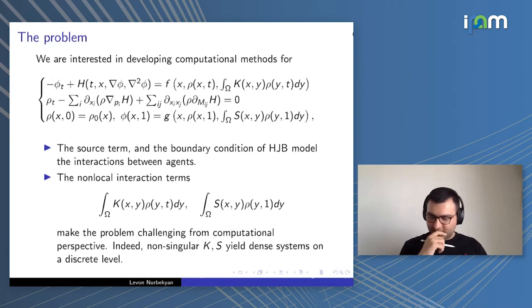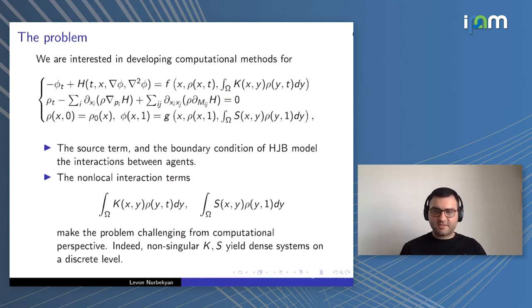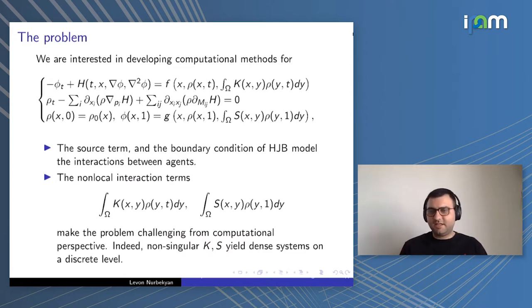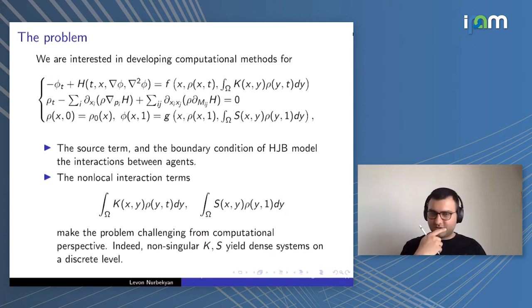The way this right-hand side in the HJB depends on the measure rho defines what type of mean field game system you get. I wrote a somewhat general situation where there is some nonlinear function f, and it depends on the density locally, and also it may depend on the density in a non-local fashion — so there is this integral. The same for the terminal condition. I'll explain a computational approach that handles these non-local terms.